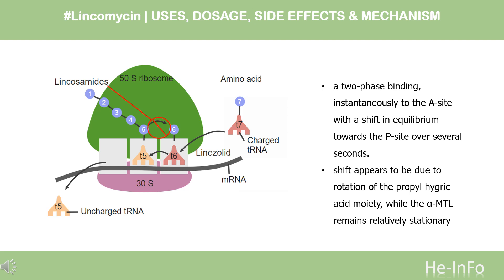This suggests the propylhygric acid moiety may be free to rotate, similar to clindamycin. This mechanism is supported by the observation that the most common resistance mechanism, which also affects macrolides and streptogramin B — MLSB resistance — involves methylation of A-2058. Other resistance mechanisms similarly target residues such as A-2058, A-2059, and C-2611.